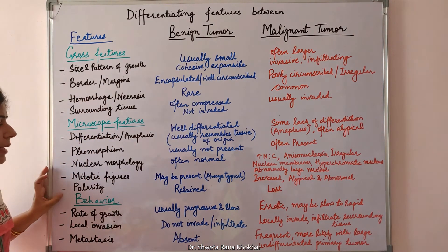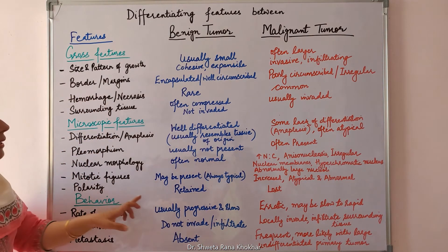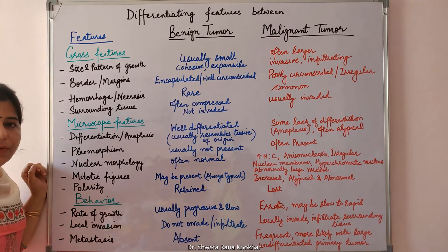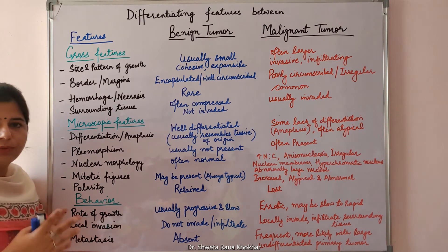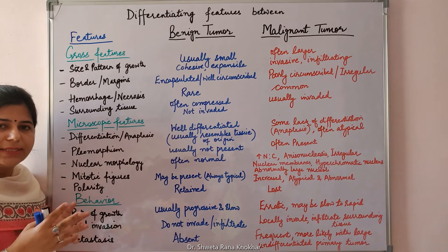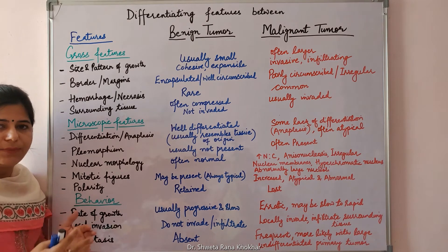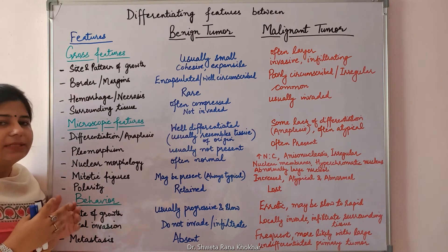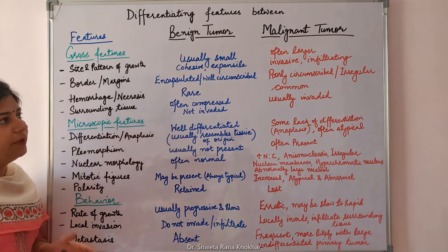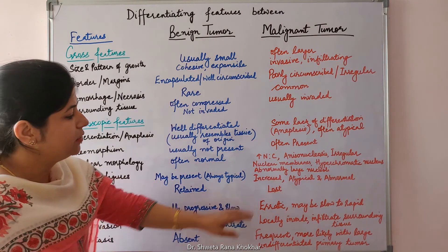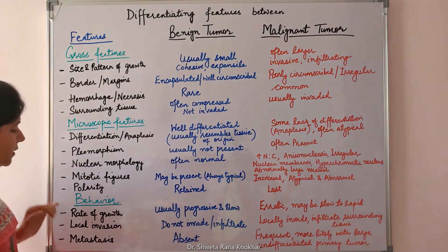Polarity is retained in benign tumors, with respect to the tumor cells as well as with respect to the basement membrane. Whereas it is lost in case of malignant tumors.